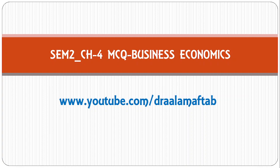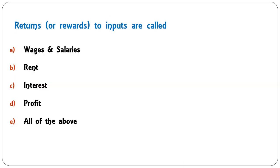The first question: returns or rewards to inputs are called — wages/salaries, rent, interest, profit, or all of the above? The inputs could be labor, capital, or entrepreneur. For each different input a different name is given: for labor it is wage/salary, for land it is rent, for capital it is interest, and for entrepreneur it is profit. So the correct answer is all of the above.